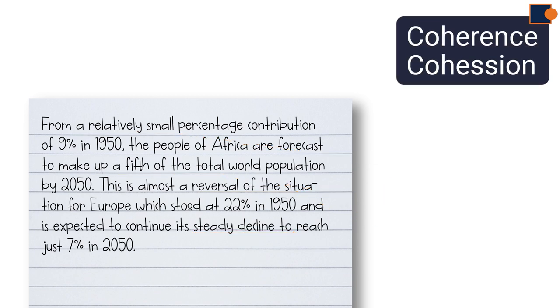In terms of coherence and cohesion, sentences are well connected with the use of linking phrases, such as from, this is almost a reversal for Europe, which serve as a connection point between Europe and point about Africa. Commas and conjunctions like and are used to connect ideas.